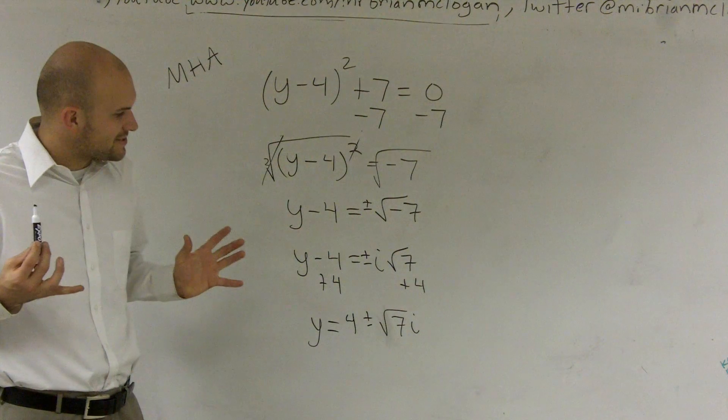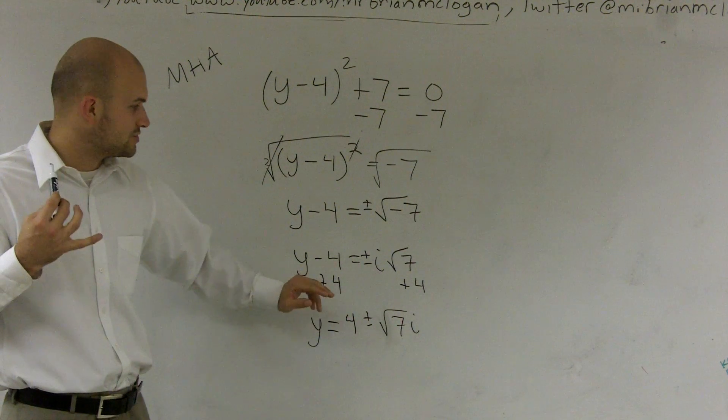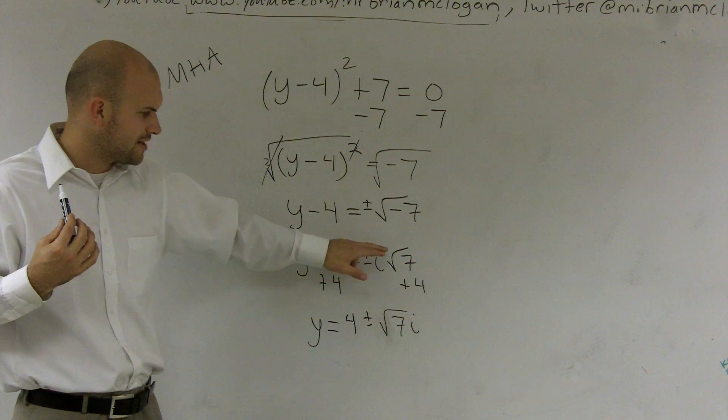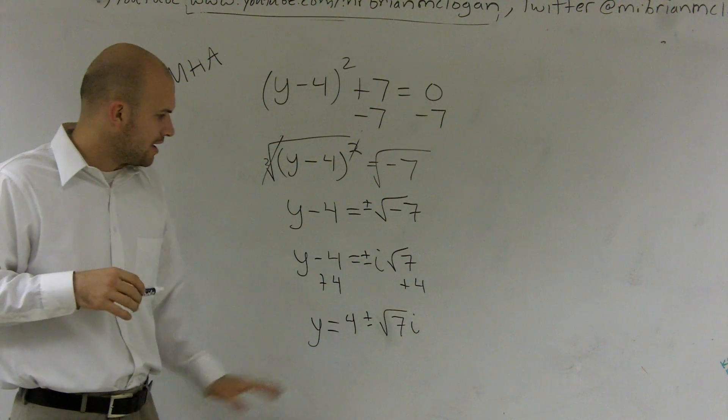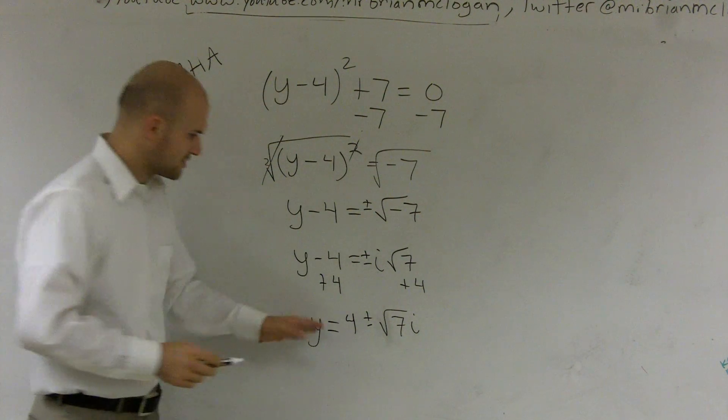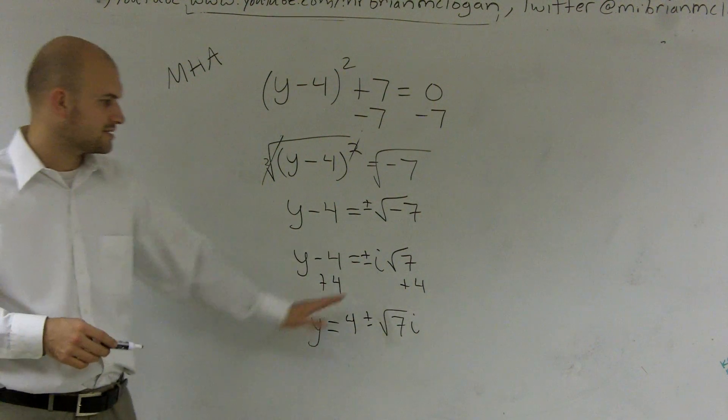So therefore, the final answer, make sure you have the plus or minus. It's huge. And also make sure you have the i because we don't deal with square root of negative numbers. Therefore, it's y equals 4 plus or minus square root of 7i.